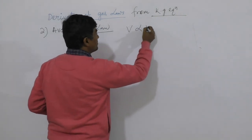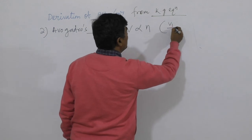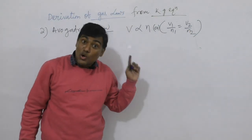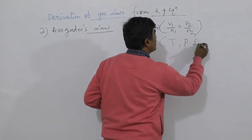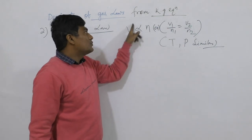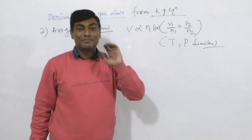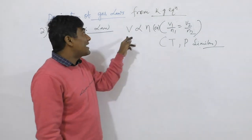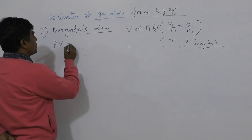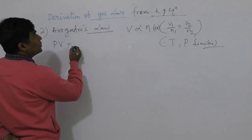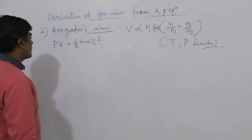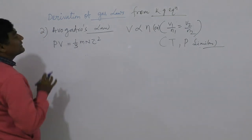In Avogadro's law we have to prove that V is directly proportional to N, or equivalently V1 by N1 equals V2 by N2. The law states that equal volumes of all gases under similar temperature and pressure conditions contain equal numbers of molecules. We will prove this from the kinetic gas equation: PV equals 1 by 3 MNc̄².